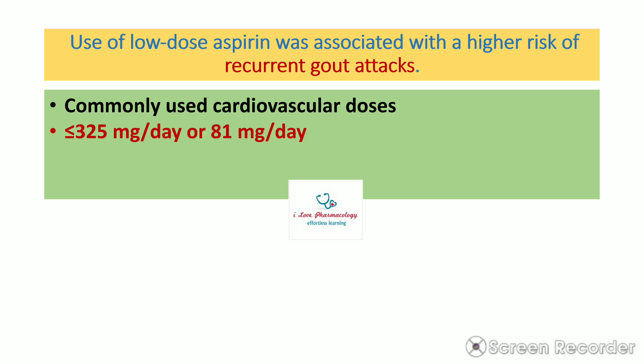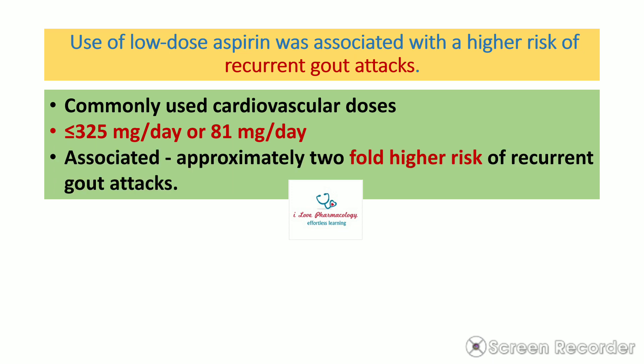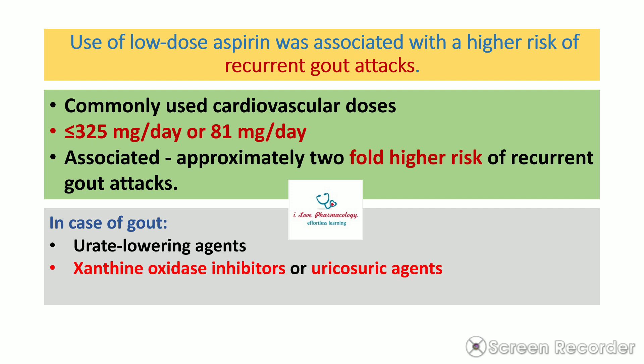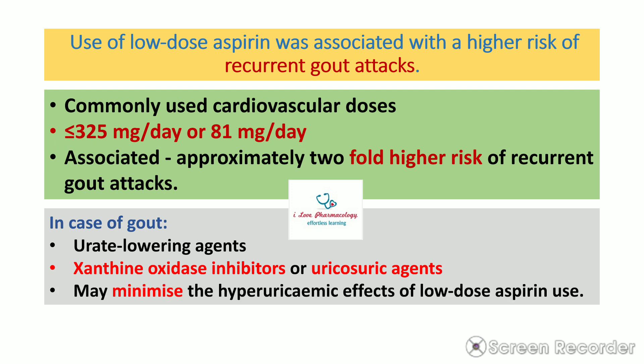Low-dose aspirin — less than 325 mg per day, or 81 mg per day — is associated with a twofold higher risk of recurrent gout attacks. These low doses are cardioprotective in action. In patients with gout, uric acid-lowering agents such as xanthine oxidase inhibitors or uricosuric agents should be used, as these may minimize the hyperuricemic effects of low-dose aspirin.